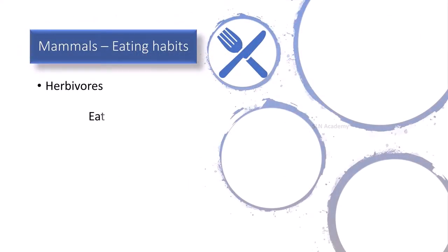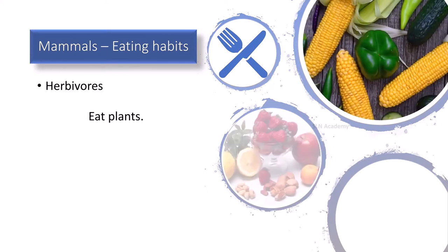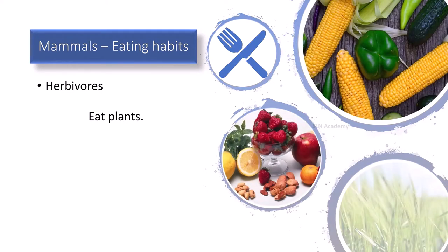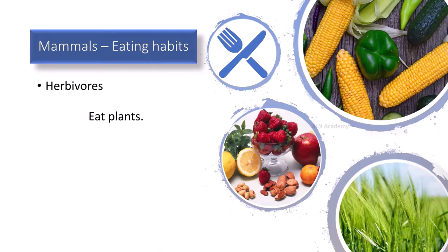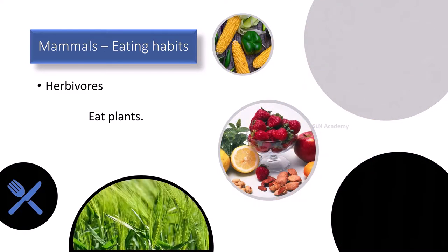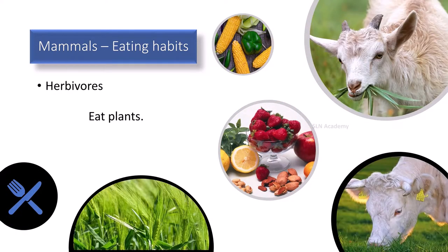Plant-eating mammals are called herbivores. They have strong grinding teeth. Examples of herbivores are goats, cows, buffaloes, etc.